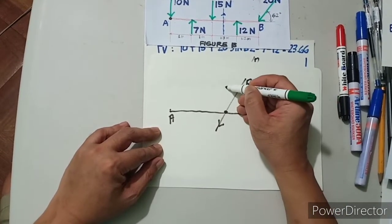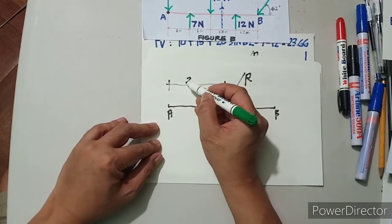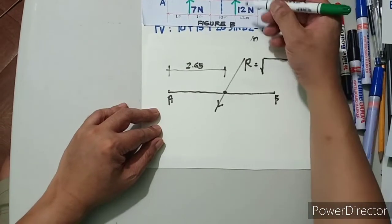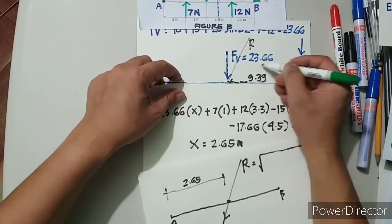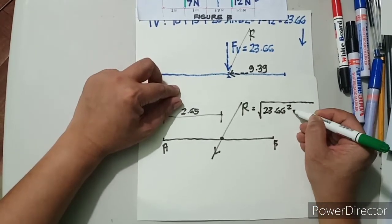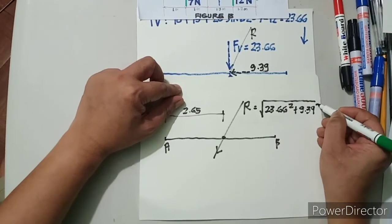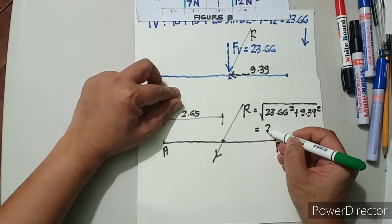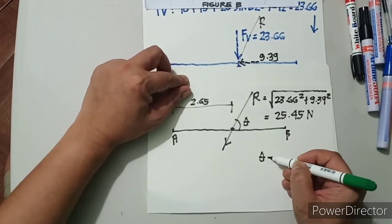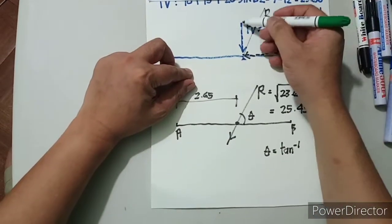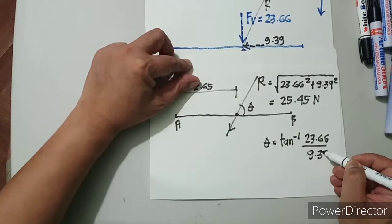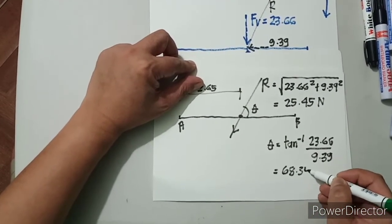A resultant force passing through the line AB at a distance of 2.65. And this resultant R is equivalent to the square root of your vertical forces squared plus horizontal forces squared: √(23.66² + 9.39²). So you have a resultant equivalent to 25.45 newtons, acting at a certain angle theta. That angle theta is the tangent inverse of the vertical component 23.66 over 9.39, and the result is equivalent to 68.35 degrees.